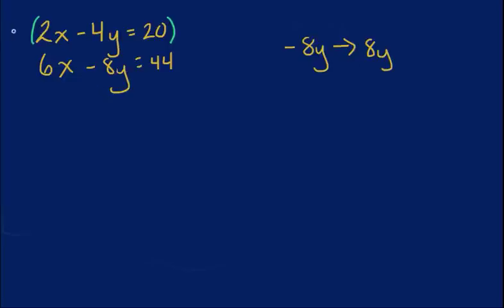Well, that would actually be a negative 2. Why? Because a negative 2 times a negative 4y would give me a positive 8y. But I also have to multiply that by every term. So I'm going to go ahead and do that.